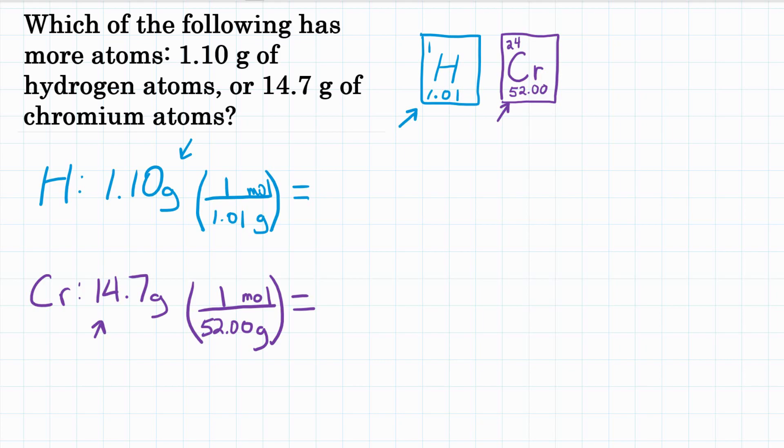And if we solve these for hydrogen, we get 1.09 moles. Our grams cancel out. We're left with moles. For chromium, we get 0.28 moles for chromium. Grams cancel out.